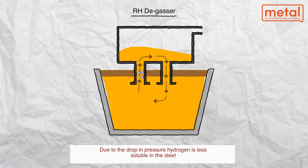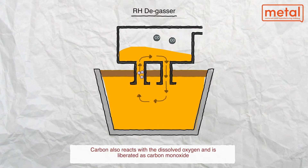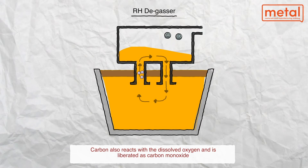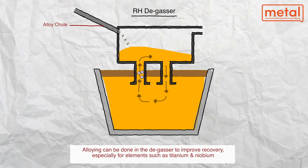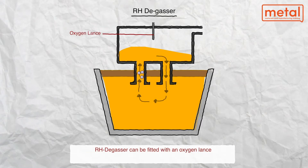The ladle of steel is placed on a transfer car and moved into position below the degasser. The degasser is a refractory-lined vessel connected to a powerful vacuum system. Two internal and externally refractory-lined nozzles, or snorkels, are attached to the lower part of the vessel.